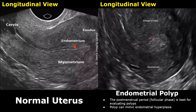On ultrasound, the postmenstrual period, also known as the follicular phase, is best for evaluating polyps because during this phase the endometrium is thin, which makes it easier to differentiate between uterine masses and normal endometrium. However, a polyp can mimic endometrial hyperplasia on ultrasound, in which the endometrium becomes abnormally thickened.